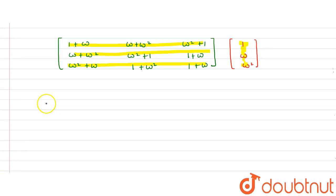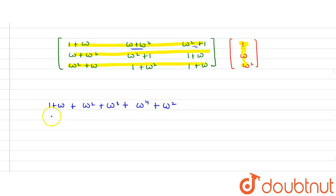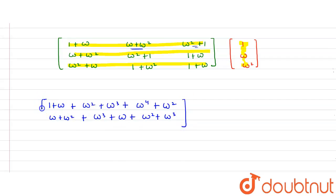So: one multiplied with (one plus omega) gives one plus omega. The second value is multiplied with omega, giving omega squared plus omega cubed. The last value multiplied with omega squared gives omega to the power four plus omega squared. Similarly for the second row: omega plus omega squared, plus omega cubed plus omega, plus omega squared plus omega cubed. For the third row: omega squared plus omega, then omega plus omega cubed, then omega squared plus omega cubed.